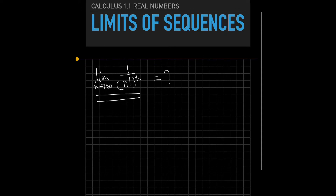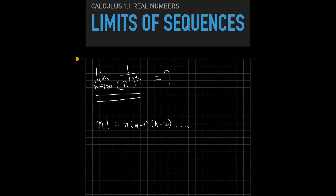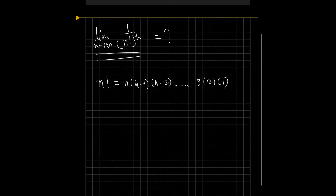Now let's start looking at the denominator, specifically at n factorial first. We notice that n factorial is equal to n times n minus 1, times n minus 2, and so on. What we can do first is to have a guess at this limit. If you imagine n gets bigger and bigger, then you take the nth root of every term.